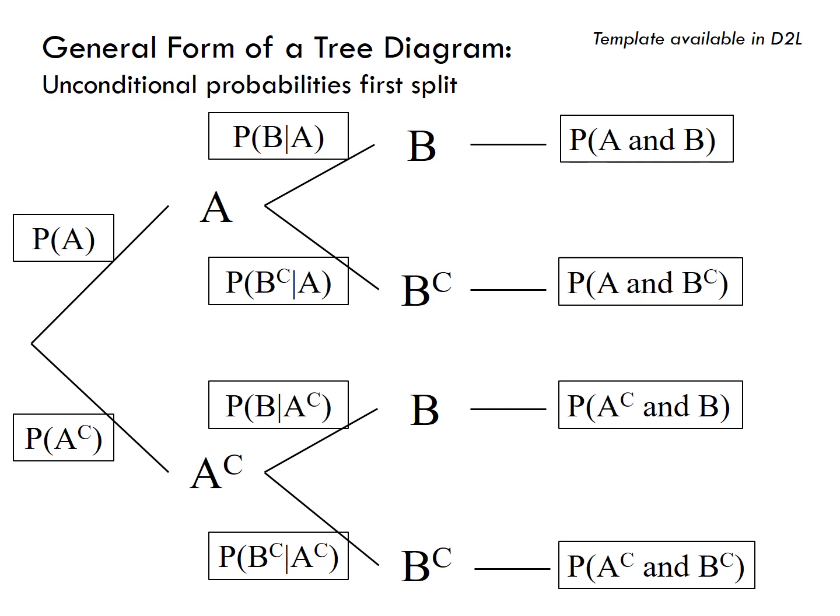The probability of A given B is just finding how likely A is to occur if B has already occurred. In other words, I can find the probability of A given B by finding how often A and B occur together, divided by the total times that B has occurred. So we can get this from the last part of the tree.